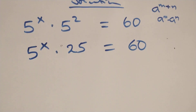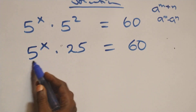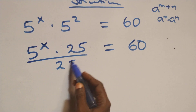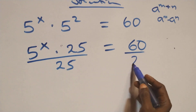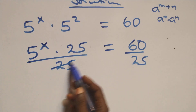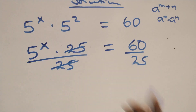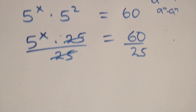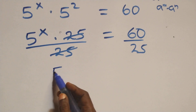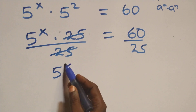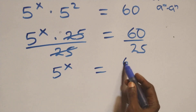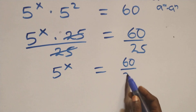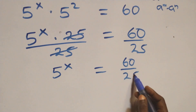In the next step, we divide both sides by 25 — divide this side by 25 and also divide the other side by 25. The 25s cancel each other, and we have 5 raised to power x equals 60 over 25.